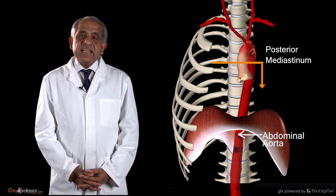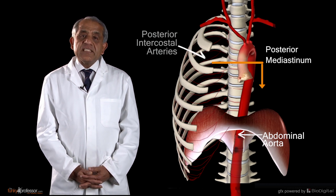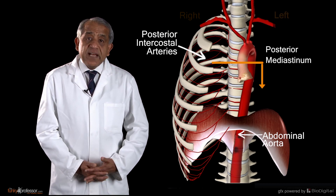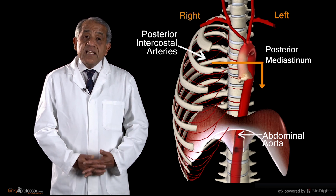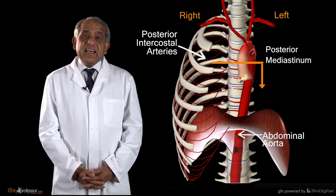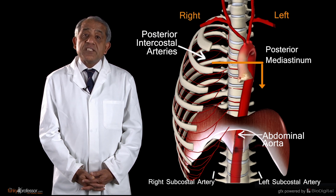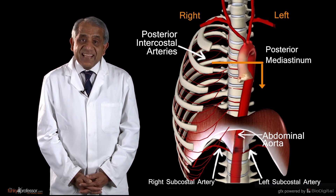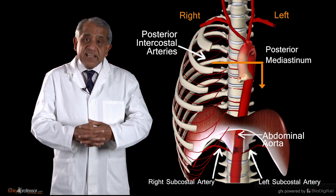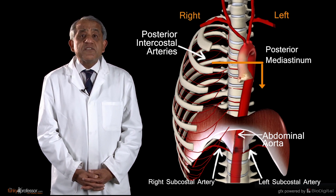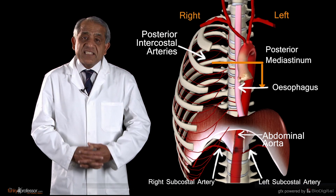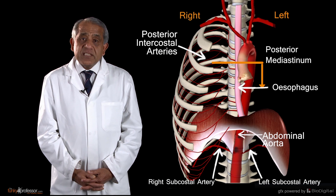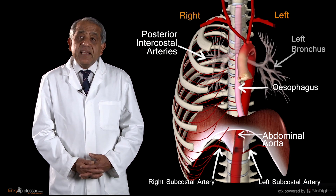The branches of the descending thoracic aorta are the posterior intercostal arteries for the lower nine intercostal spaces, both on the right and left sides — nine pairs of intercostal arteries. In addition, it gives rise to the right and left subcostal arteries. From its anterior aspect, it also gives rise to a variable number of small branches that supply the esophagus in the posterior mediastinum. Additionally, it frequently gives branches that supply the left bronchus.